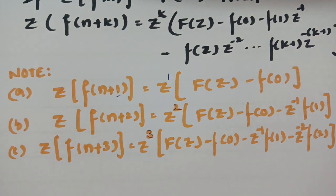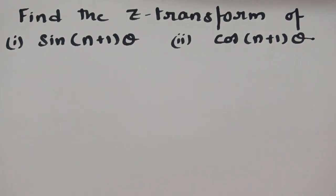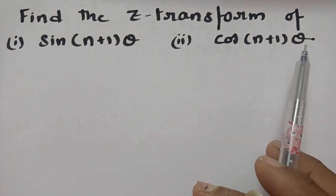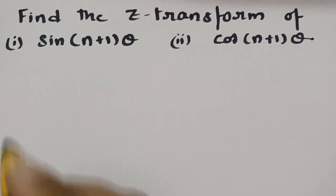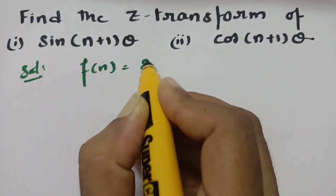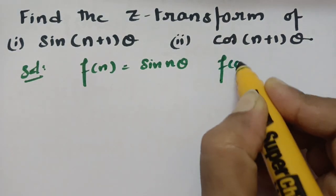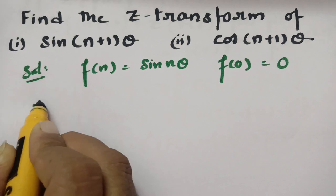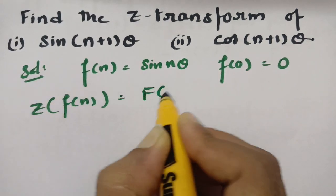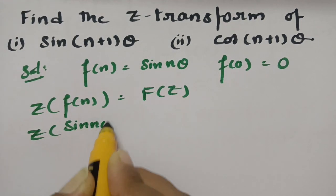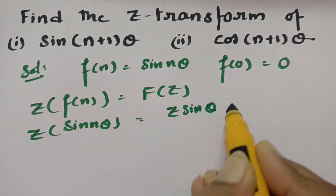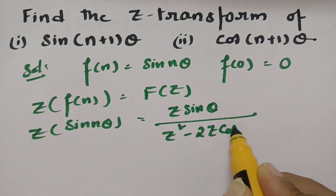Using the shifting property, there is an important formula to apply. We need to find the Z transform of sin((n+1)θ) — shifted towards the left by one unit — and cos((n+1)θ). First, we take f(n) equal to sin^n(θ), and clearly f(0) equals sin(0) which is 0. We need the Z transform of f(n), which is capital F(z). The Z transform of sin(nθ) is z·sin(θ) divided by z^2 minus 2z·cos(θ) plus 1.